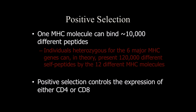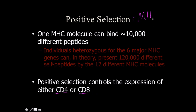Positive selection controls CD4 and CD8. Why? Because positive selection is all about MHC complexes. CD4 corresponds to MHC class 2, and CD8 corresponds to MHC class 1. So this is where thymocytes lose their double positivity and become single positive.